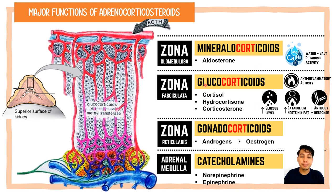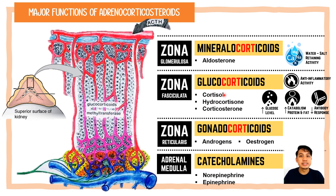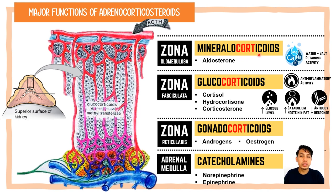Glucocorticoids have important effects on intermediary metabolism of protein and fat, and also function in immune regulation by reducing antibody response and providing anti-inflammatory activity. The natural glucocorticoid is cortisol, while synthetic glucocorticoids available in hospitals and markets include hydrocortisone and corticosterone. Mineralocorticoids, principally aldosterone, exert salt-retaining activity. Gonadocorticoids such as androgens and estrogen have androgenic and estrogenic activity.